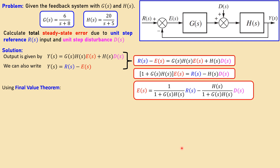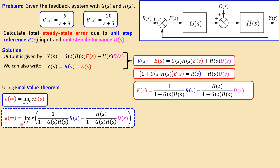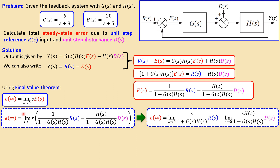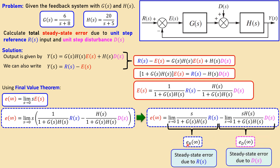Now using the final value theorem we can calculate what the final value of that error will be. This time we use this formula: the limit as S approaches zero of S times this complete expression. That means we need to use this complete expression, and using parentheses you can see it here. We can use the limit for each part and take the S in the numerator for each part of the expression. This first part is the error due to the reference signal, and this is the error due to the disturbance — called E sub R and E sub D.